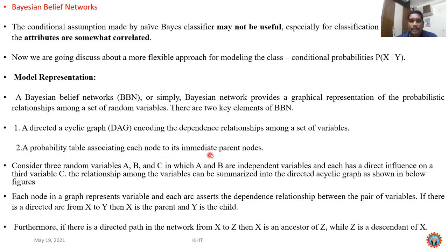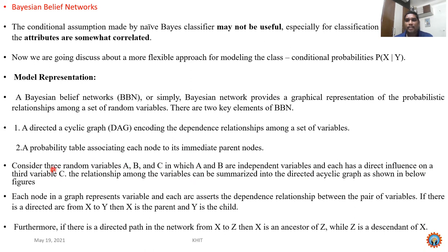The probability table associates each node with its immediate parent nodes, so we identify which are parent nodes, child nodes, ancestors, and descendants. Consider three random variables A, B, C where A and B are independent variables but each has a direct influence on the third variable C. Among the three variables, A and B are independent, but A to C are dependent and B to C are dependent. This relation can be summarized into a Directed Acyclic Graph.